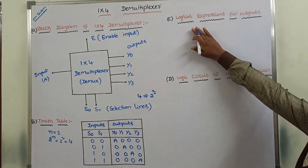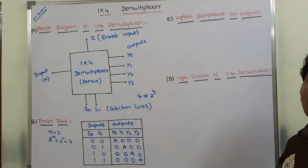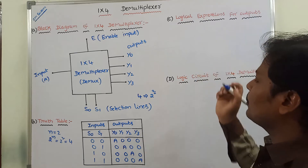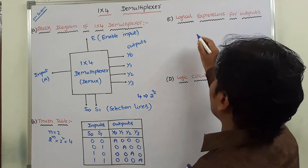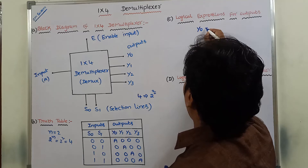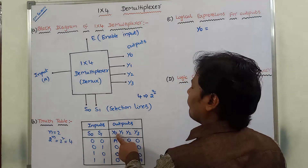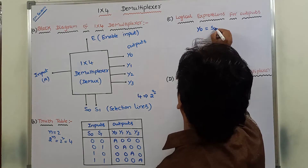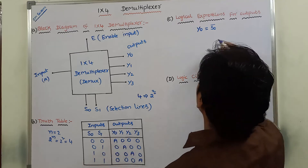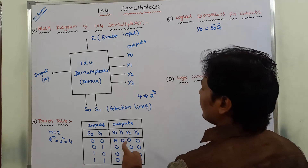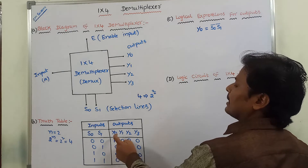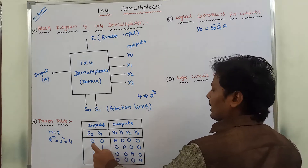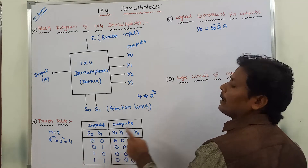Next, we have to write the logical expressions for each and every output. First, we have to write the logical expression for Y0. Y0 is selected when S0 value is 0 and S1 value is 0. S0 value 0 means S0 bar, S1 value 0 means S1 bar. And the input connected to Y0 is A. So Y0 is equal to S0 bar AND S1 bar AND A, with enable E.